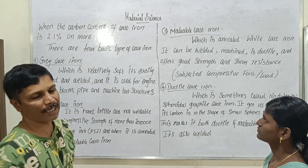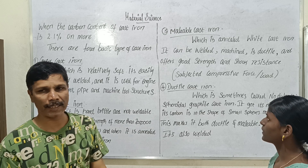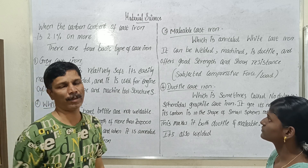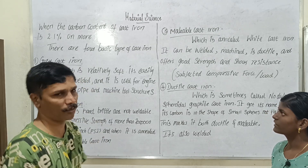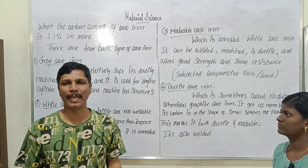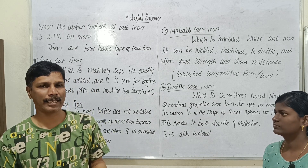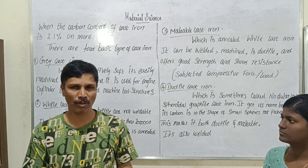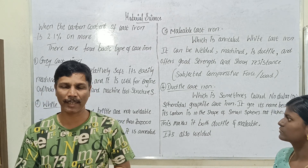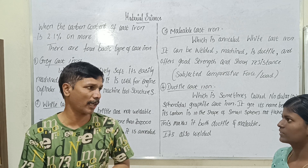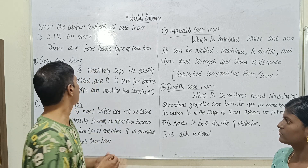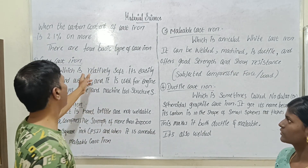What do we call cast iron? There are four basic types of cast iron. What do we call the first cast iron? Gray cast iron.